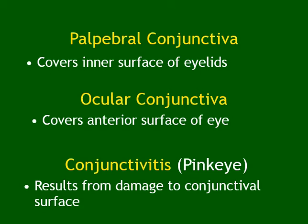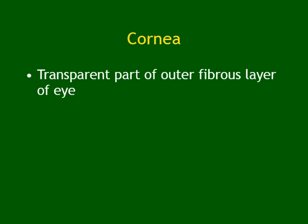For example, conjunctivitis — 'itis' obviously means inflammation or infection. Conjunctivitis, also called pink eye, is damage of the conjunctival surface; it can be inflammation or infection. The second structure is the cornea, which is the middle transparent part. It is a transparent outer fibrous layer of the eye.